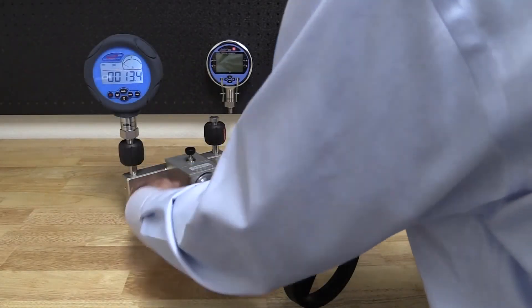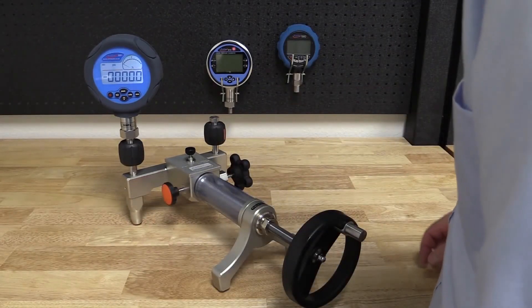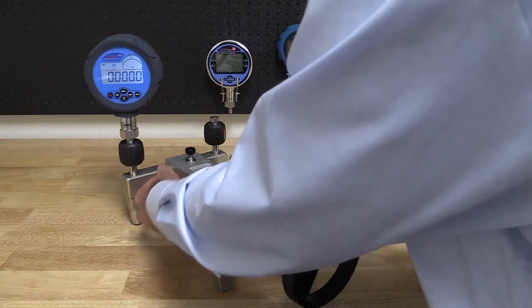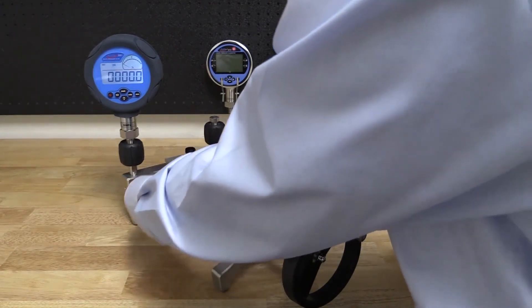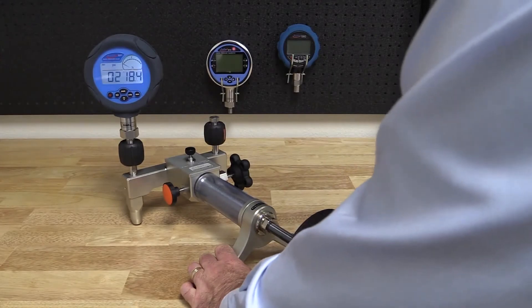Once you see a good vacuum being pulled and very few bubbles emerging in the liquid reservoir, then we are ready to start generating pressure. You should easily be able to generate full-scale pressures with less than half the stroke of the main screw press.